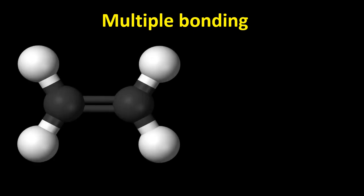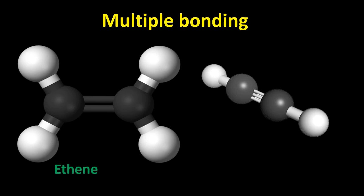Now for multiple bonding in carbon — carbon-carbon double bonds and carbon-carbon triple bonds. In ethene, carbon forms a double bond with the other carbon atom; as carbon uses two valences for the carbon-carbon double bond, the number of hydrogen atoms is reduced compared to ethane, and the remaining two valences are satisfied by hydrogen. In ethyne, carbon forms a triple bond with the other carbon atom, and the remaining valence is satisfied by hydrogen. In this way, carbon can form multiple bonds with other carbon atoms, greatly increasing the diversity of organic compounds. Thank you for watching — keep watching for more videos, and have a great day.